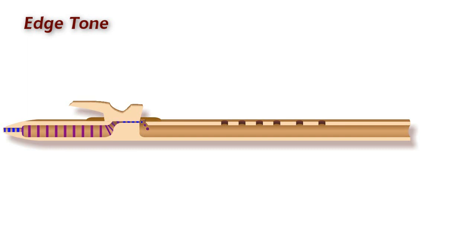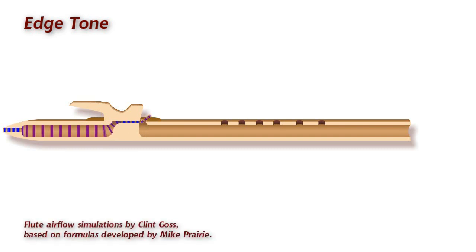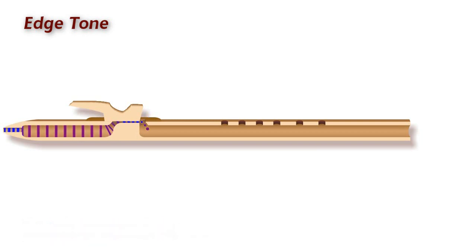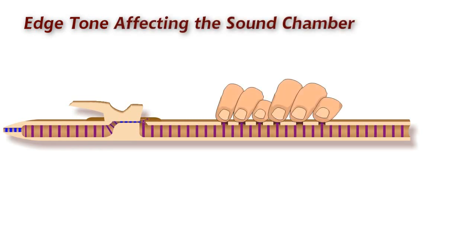So, now back to the flute as a whole. I'm simulating here what happens when we put our breath into the flute. It goes through the flue, across the sound hole, and creates an edge tone. Now, that edge tone is going to begin affecting the air inside the main sound chamber of the flute. With all the finger holes closed, we've got this long column of air that's getting pushed and pulled by the oscillating edge tone.